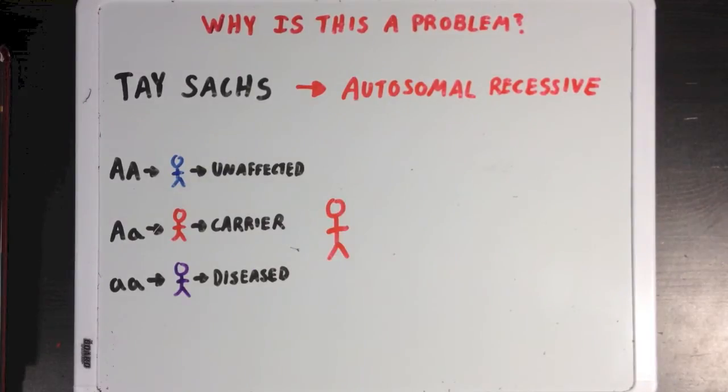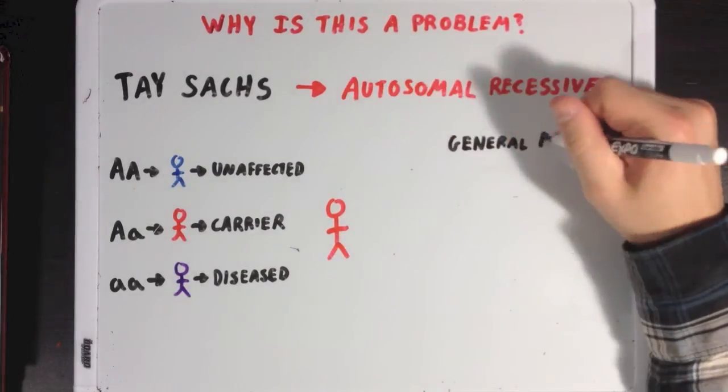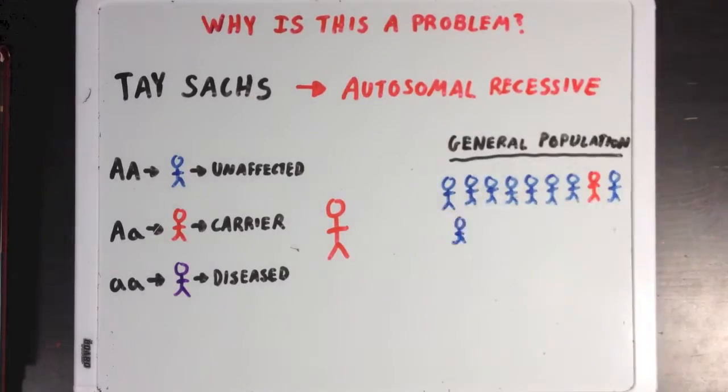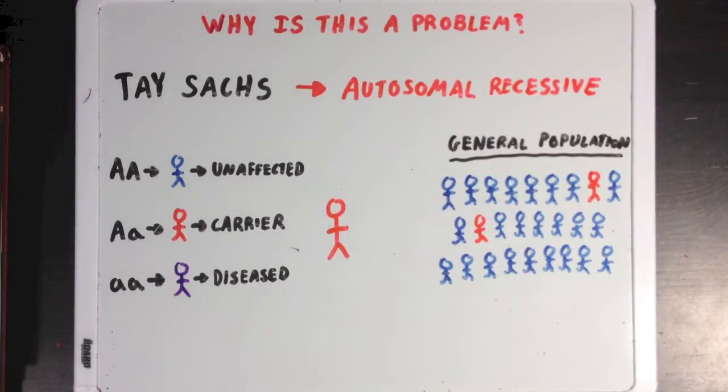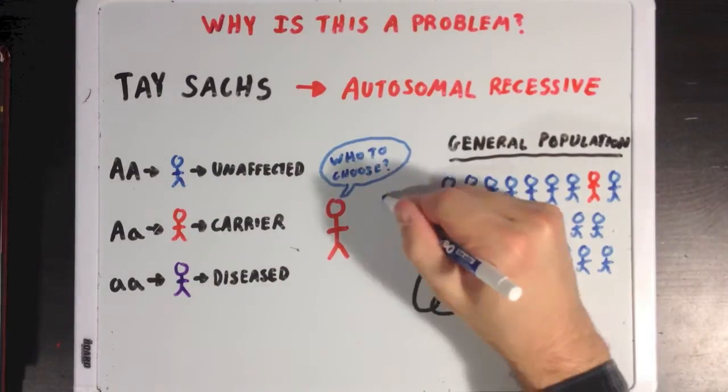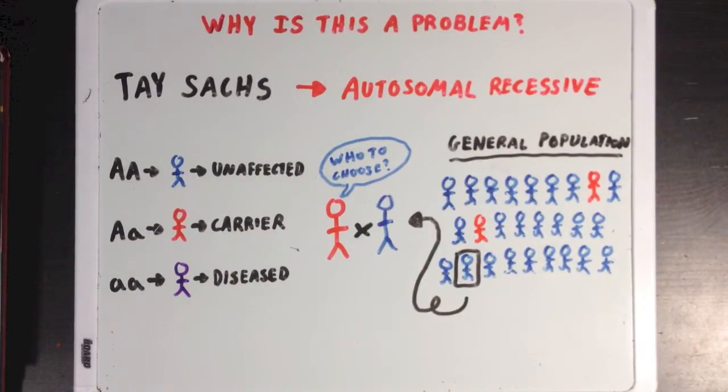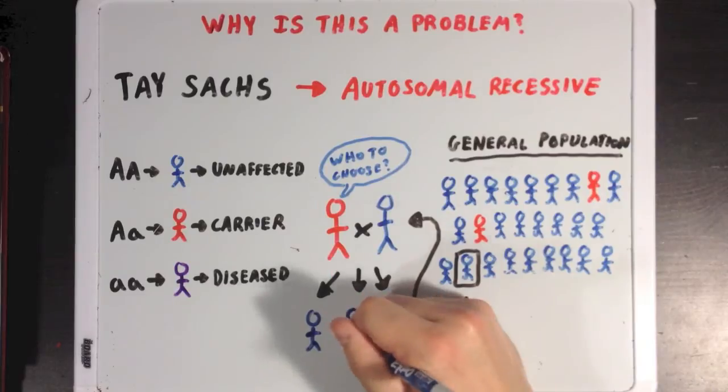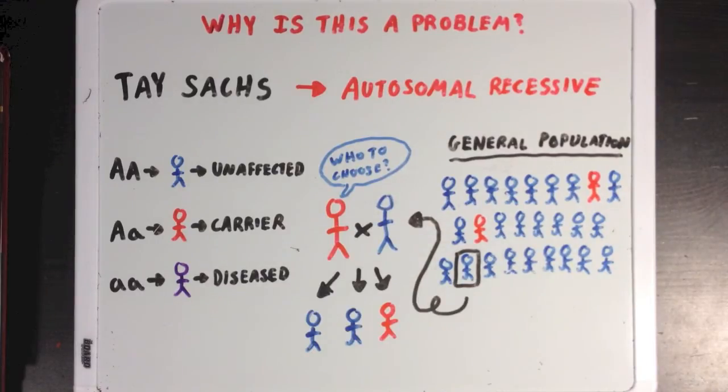So let's say we have someone who's a carrier for Tay-Sachs. So he has just one copy of the gene. If we're looking at the general population, we can see that the odds of the person choosing a mate that's also a carrier for the disease are pretty low. And if he eventually has some kids, none of them will be affected by the disease and only a few will even be carriers.